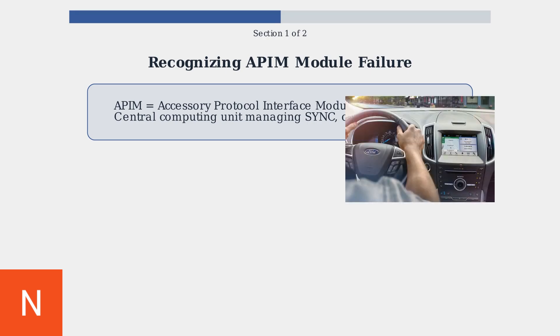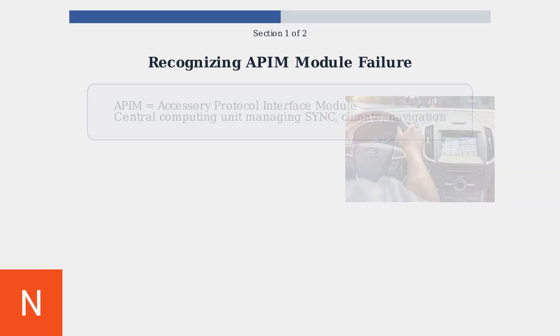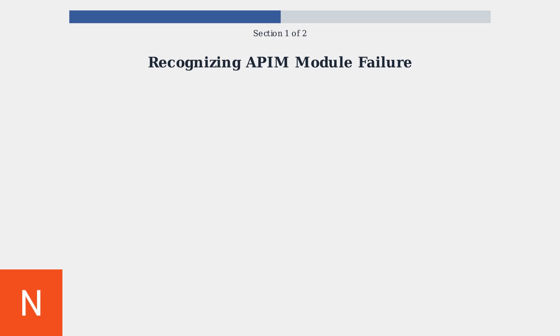When the APIM fails, it can cause multiple problems throughout your vehicle's electronic systems. Let's examine the most common symptoms you should watch for.